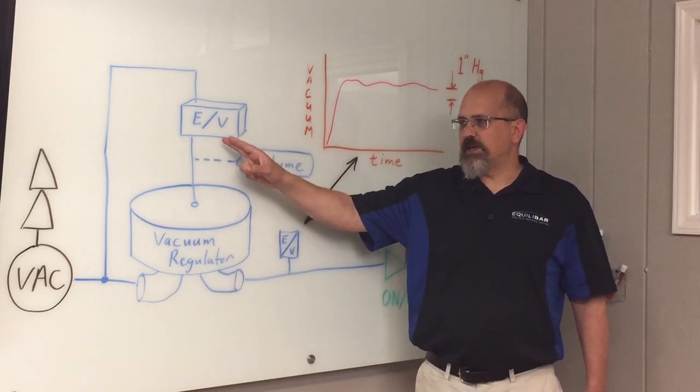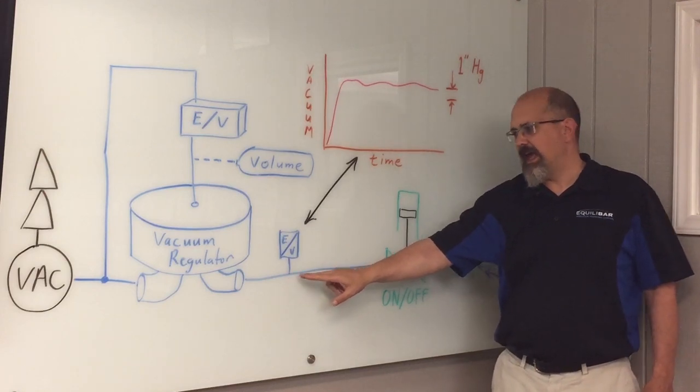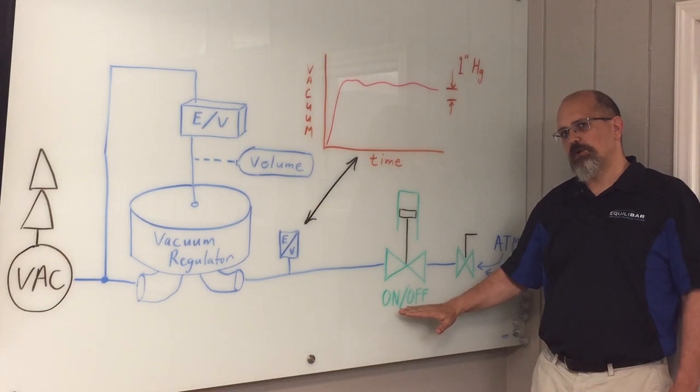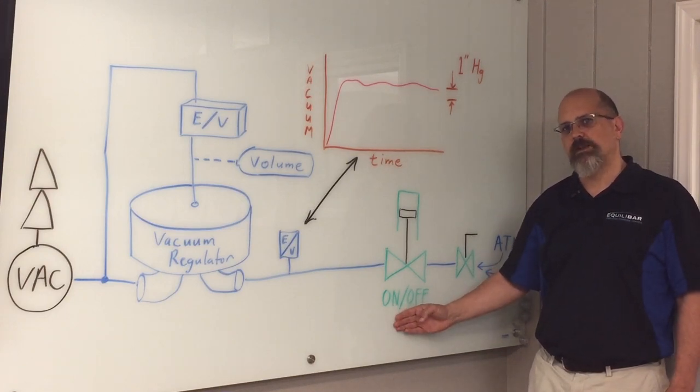We're going to set a fixed command. It's going to control a fixed vacuum pressure here, and what we're going to do is, with this on-off valve, we're going to put a flow disturbance into the system. Essentially, we're going to go from no flow to full flow with this on-off valve, and then back again.